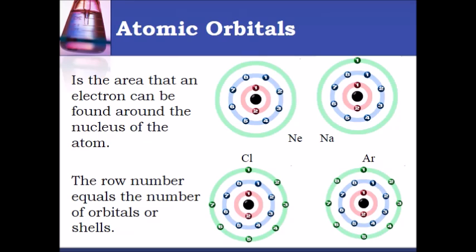The first shell for all of those elements holds only two electrons. The second shell for all four of these elements holds eight electrons.